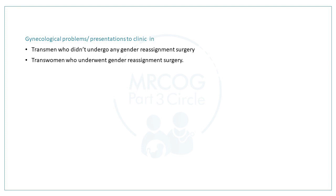If a trans man becomes pregnant, they should be given a side room in the maternity unit during labor. If they undergo gynecological surgery such as hysterectomy, they would be placed in the general surgical ward rather than the gynecological ward. During antenatal counseling, use the term 'pregnant people' rather than 'pregnant mothers', 'mothers-to-be', or 'expectant mothers', as they identify as men. If after delivery they wish to feed the baby, use the term 'chest feeding' rather than 'breastfeeding' — using 'chest' instead of 'breast' — and support them in doing so.